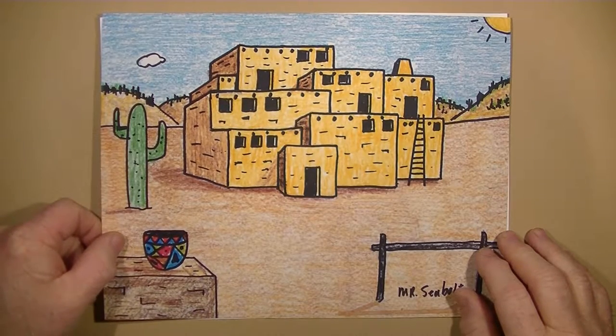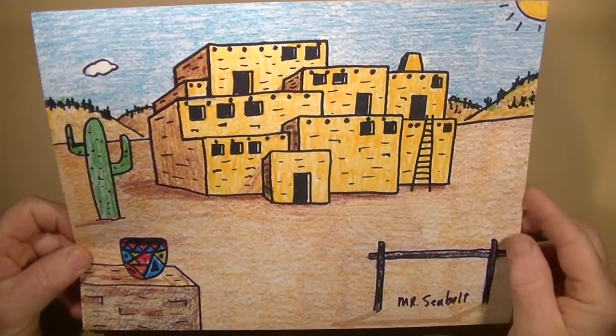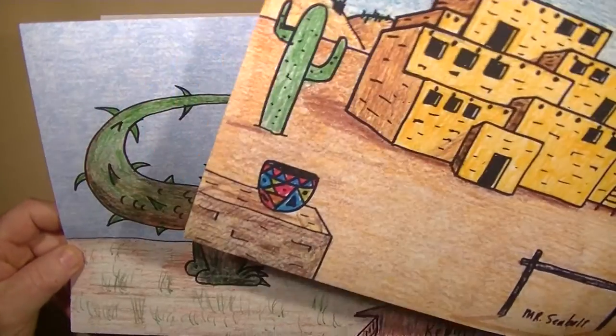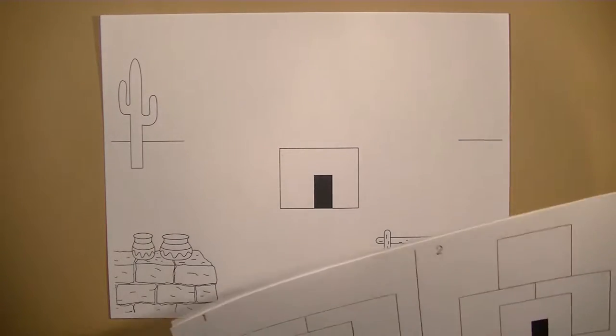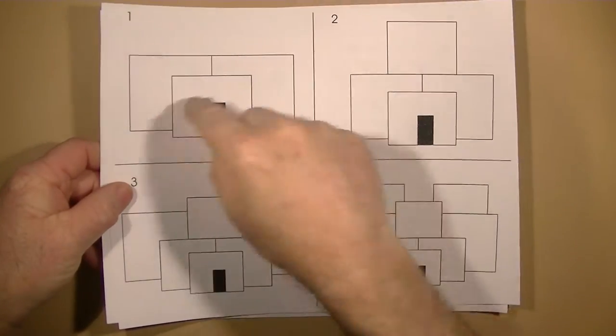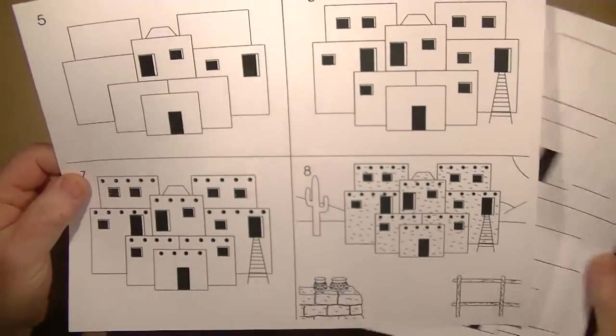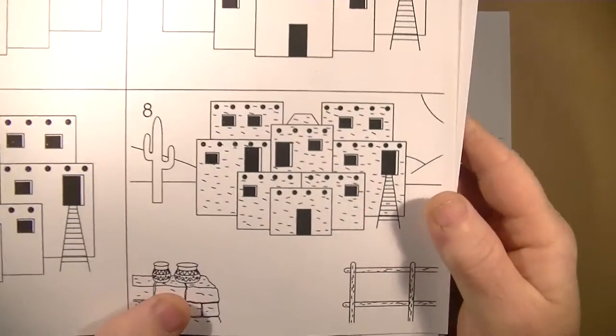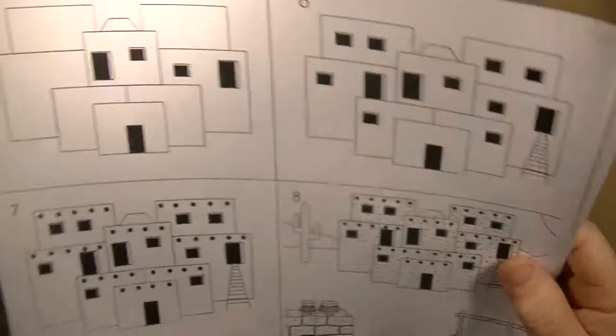They're made of mud bricks that are made from clay and straw and we're going to draw a version of that using steps. We're going to go with eight steps. Here are the first four. We'll add these pieces and we'll add that and we'll just keep going until we end up with this. So let's get started.